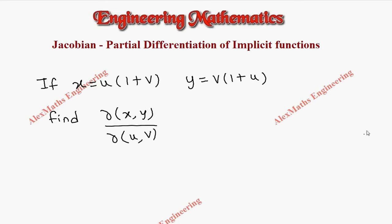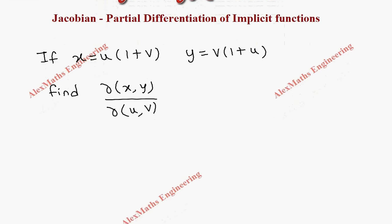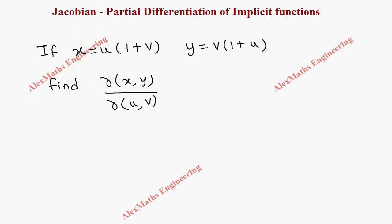Hi students, this is Alex. In this video we are going to find the partial differentiation of implicit functions using the Jacobian method. x is given as u(1+v) and y is v(1+u). We have to find ∂(x,y)/∂(u,v).